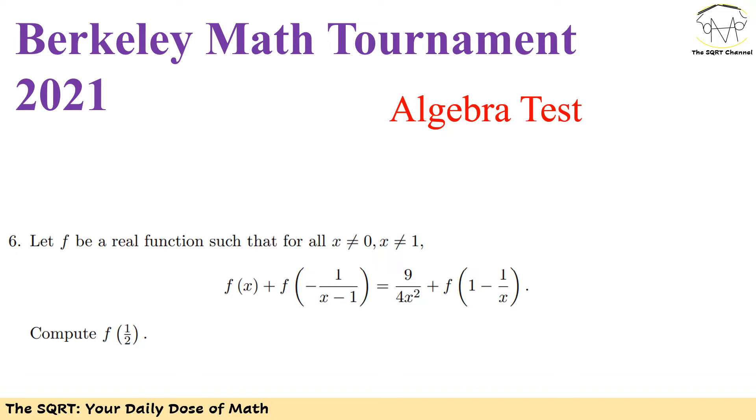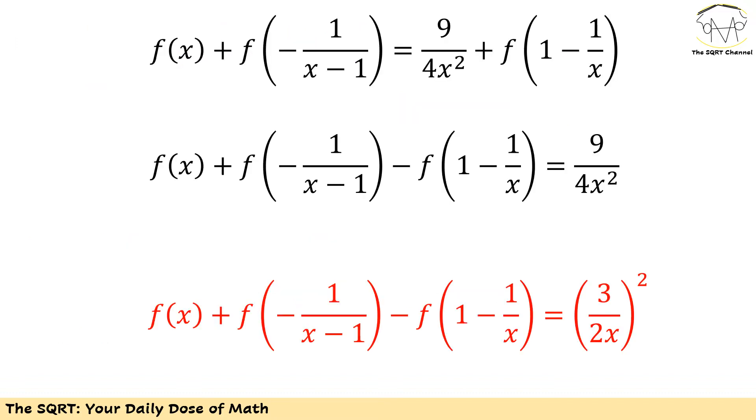Now let's deep dive into the solution. I have f of x, f of negative 1 over x minus 1, and f of 1 minus 1 over x. Let's start with moving everything that I have based on this function f to the left hand side and then have 9 over 4 x to the power of 2 on the right hand side. Then I'm going to simplify this 9 over 4 x to the power of 2 as 3 over 2 x to the power of 2 and see what I can do with it.